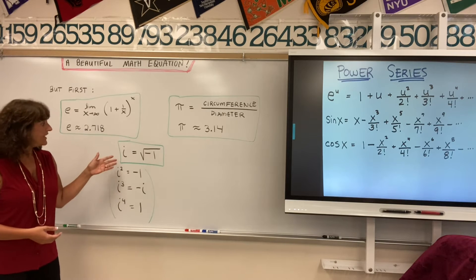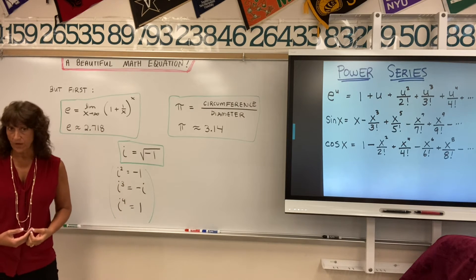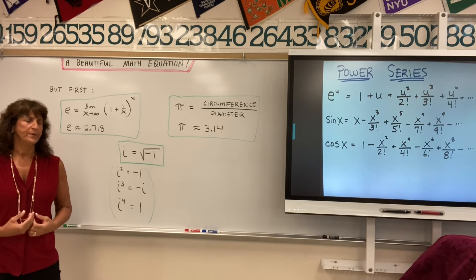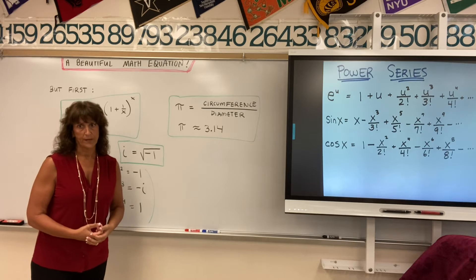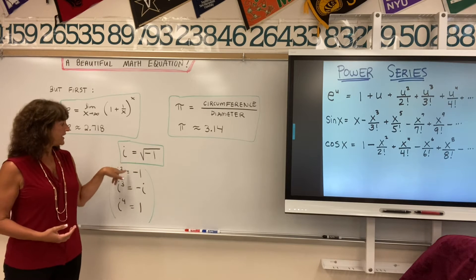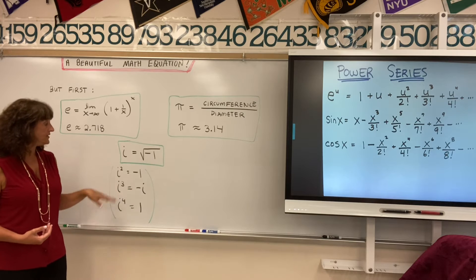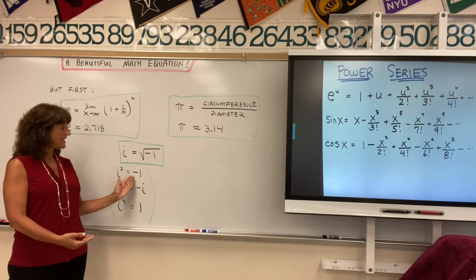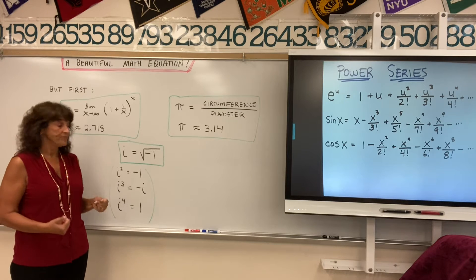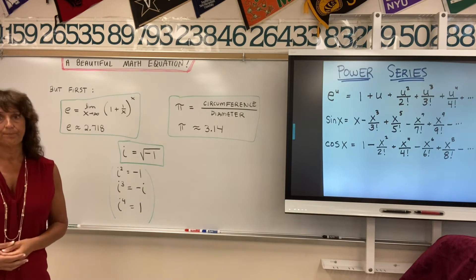Then we have i. i is imaginary — the imaginary number i. i is defined to be the radical of negative 1. In the real number system we can't take the square root of a negative number, but in the complex plane, in a plus bi form, i is defined to be the square root of negative 1. Important to note: i squared equals negative 1; i cubed equals negative i (that's i squared times i, so negative 1 times i); and i to the 4th equals positive 1 (negative 1 times negative 1). These are constants we'll need in our expansion.